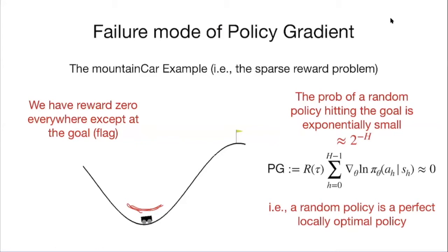This is often called the sparse reward problem, because you don't get reward everywhere — you only get reward at a place that is pretty far away from your initial state. Asymptotically, if you keep running policy gradient, eventually you'll hit the goal after exponentially many trials. But before hitting the goal, there's no signal for the policy — it just gets zero everywhere.